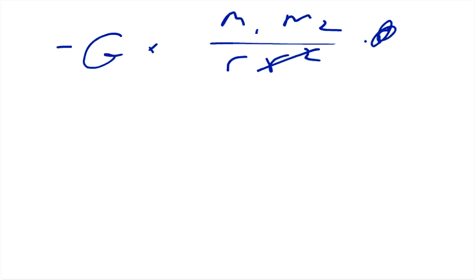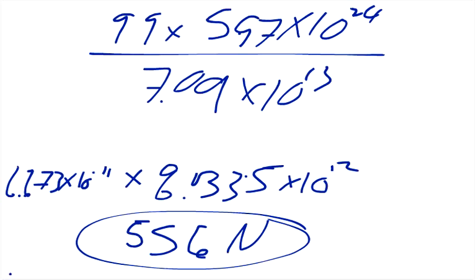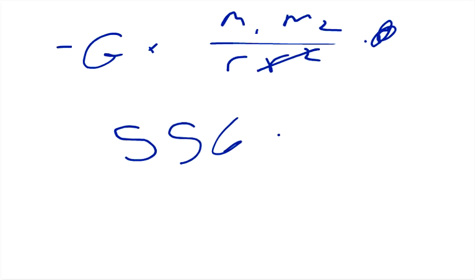so to find the potential energy, all we have to do is multiply our force of 556 times the radius that we had, which we said was 8,421,000 meters, and so we multiply those together,